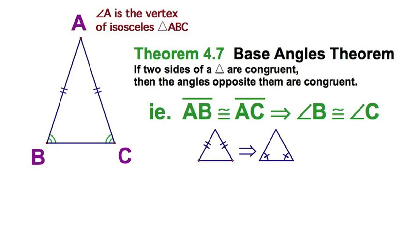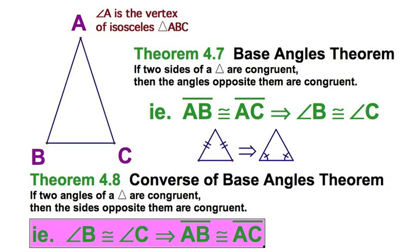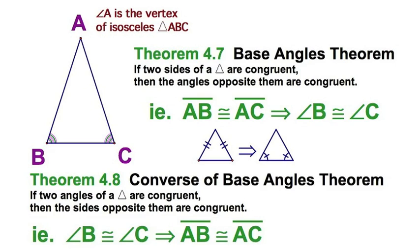Let's have a look here at converse of the base angles theorem. Just as you'd expect, if I start here with congruent angles and say if these two angles B and C are congruent, then these two sides are congruent. And my shorthand would look just like this. Just put this on your theorem 4.8, and everyone will know what you're talking about.